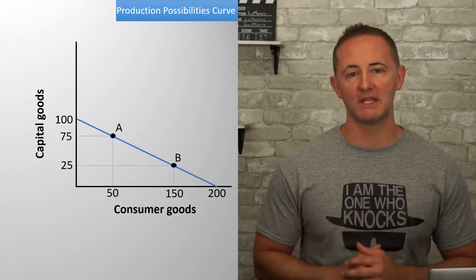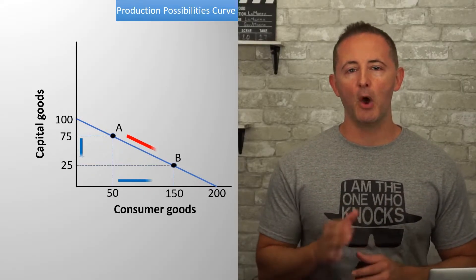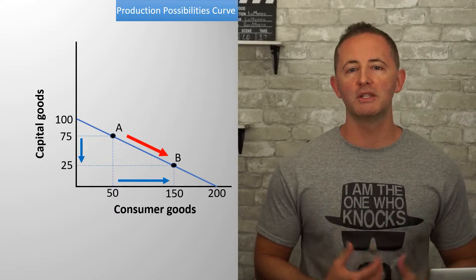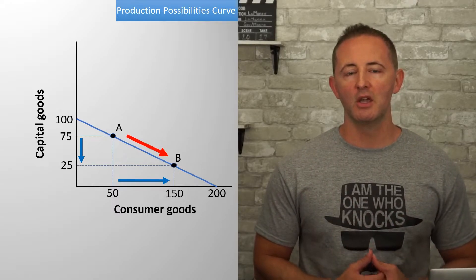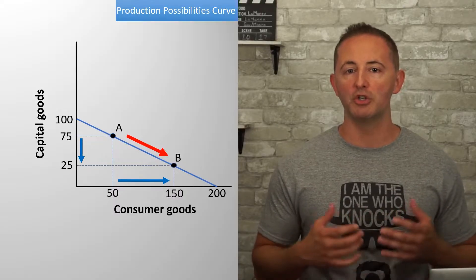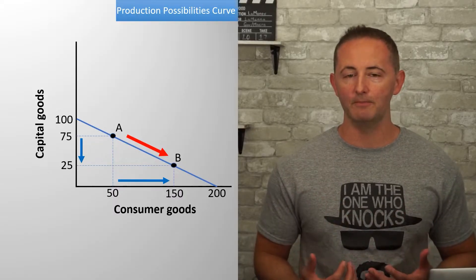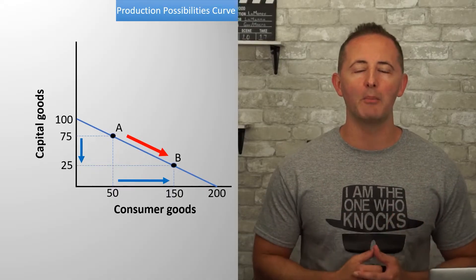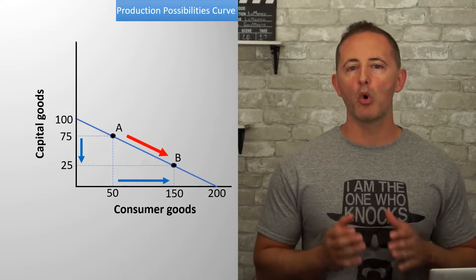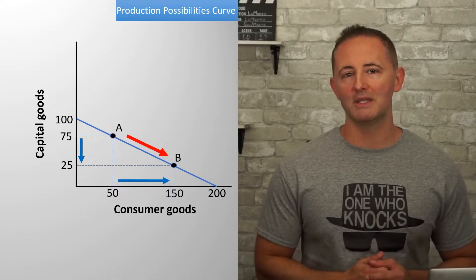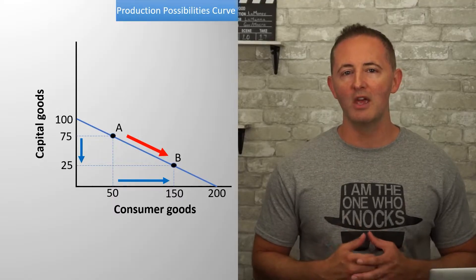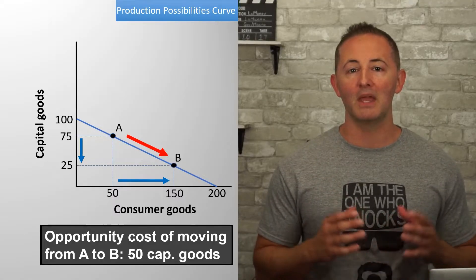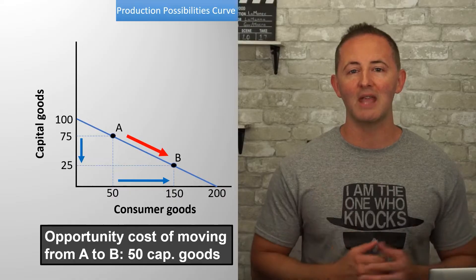Now let's be even more specific. Suppose that we move from point A to point B. We gain 100 consumer goods — we had 50, and now we have 150. What's the opportunity cost? In other words, what did we give up? We were making 75 capital goods, and now we're only making 25. So the opportunity cost of moving from A to B is 50 capital goods.